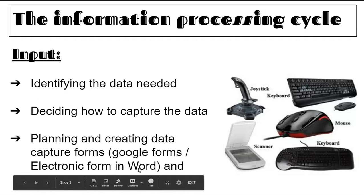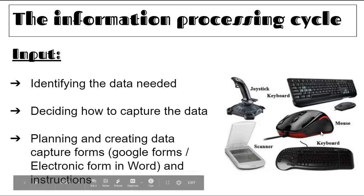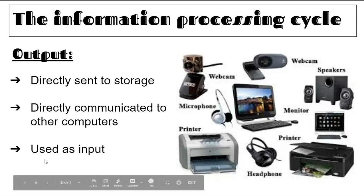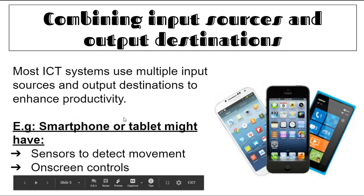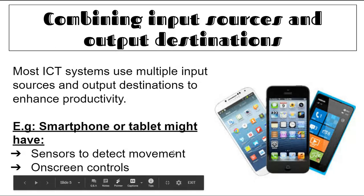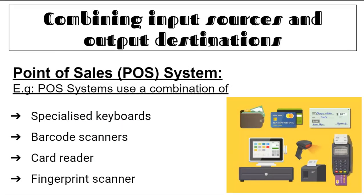Using your Google Forms, electronic forms in Word, and instructions. Output can be directly sent to storage, directly communicated to other computers, or used as input. Examples include webcam, speakers, monitor, printer, headphones. Combining input sources and output destinations enhances productivity — a smartphone or tablet might have sensors to detect movement and on-screen controls.